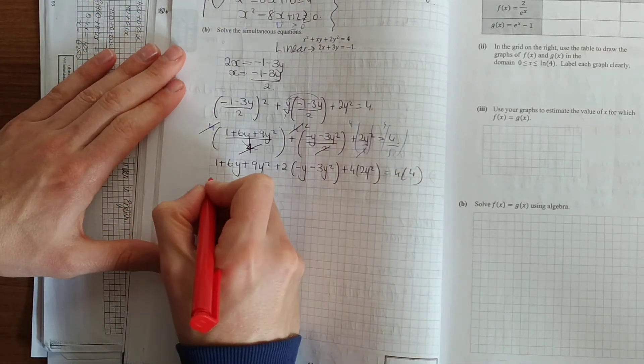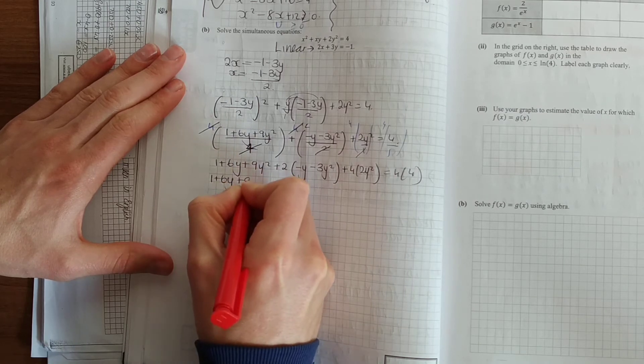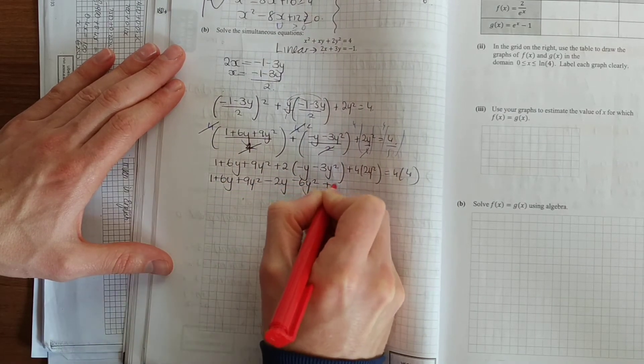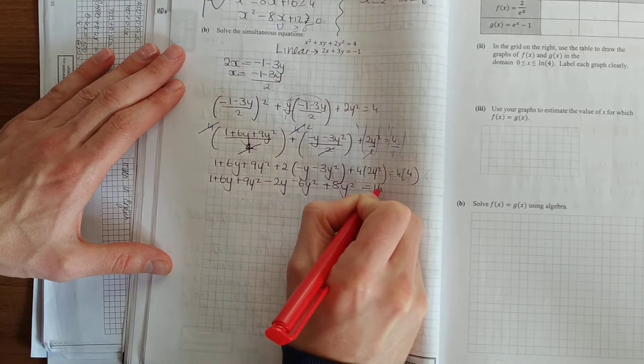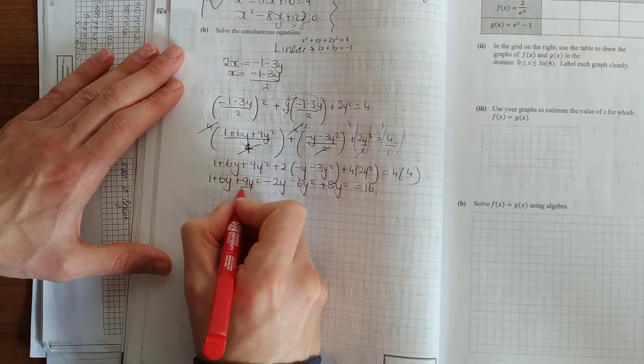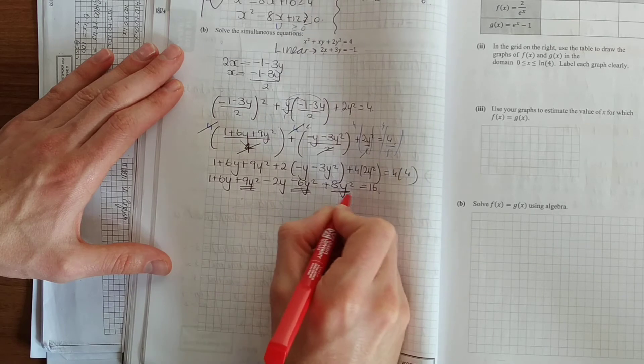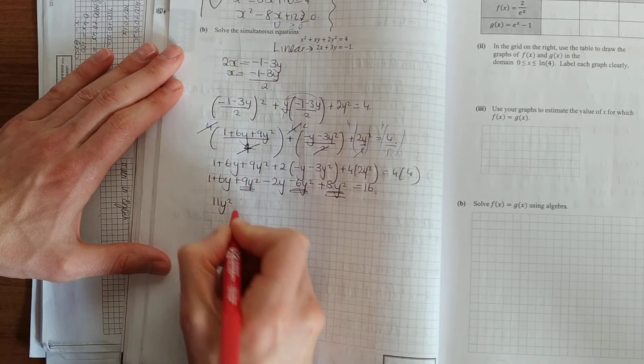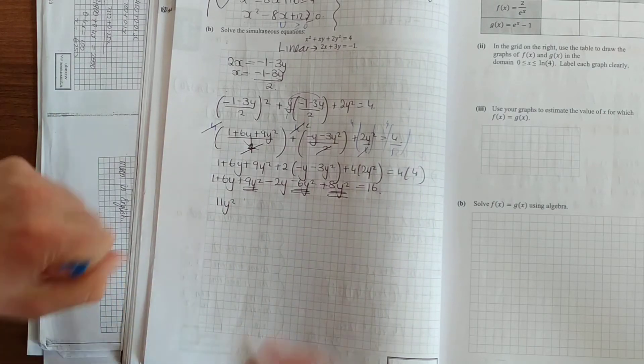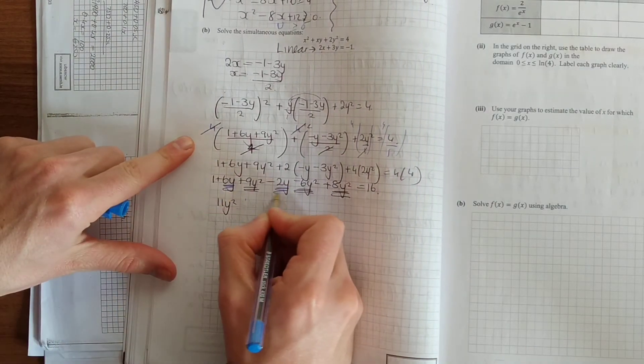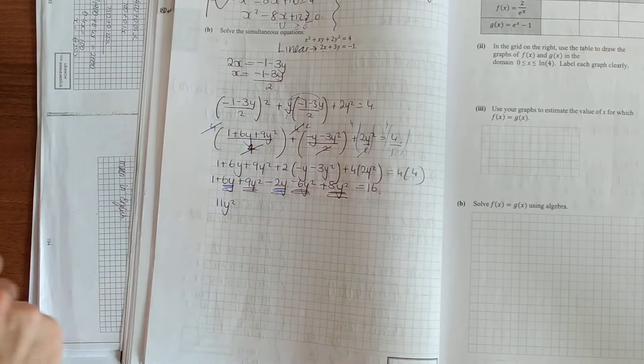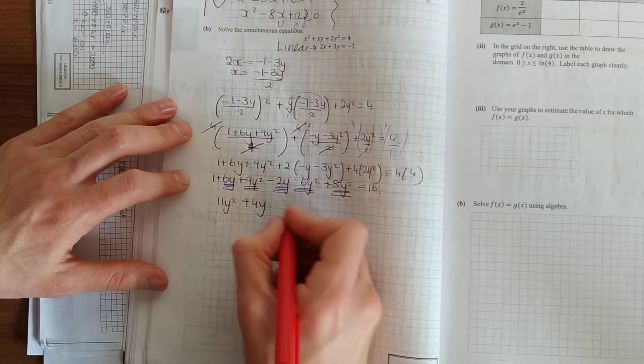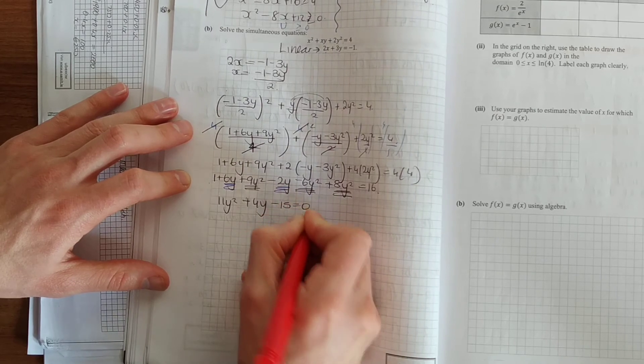And now I'll go about multiplying it out. Now tidy that up. 9y squared. 9, 8, 17. 17 minus 6 is 11y squared. These are your y's. 6y minus 2y is 4y. And 1 minus 16 is minus 15 is equal to 0.